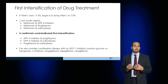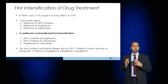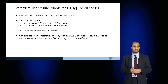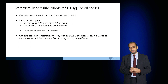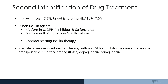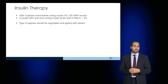Intensification is indicated if the HbA1c rises above 7.5%, with the target being to lower it. Non-insulin agents include metformin, DPP-4 inhibitors, pioglitazone, and sulfonylureas, used in combination based on the clinical situation. If despite these drugs there is very poor glycemic control or micro and macrovascular complications arise, it may be appropriate to introduce insulin therapy early.